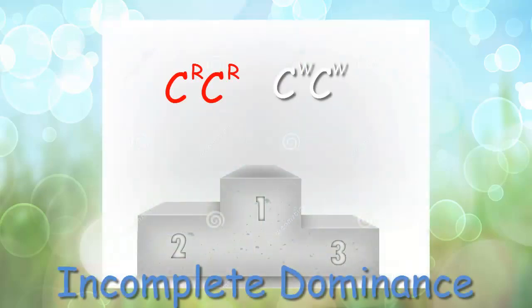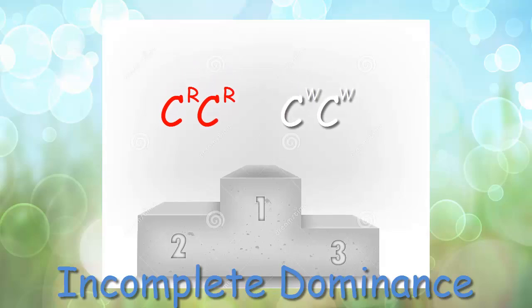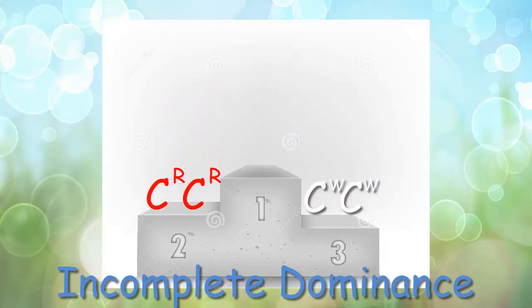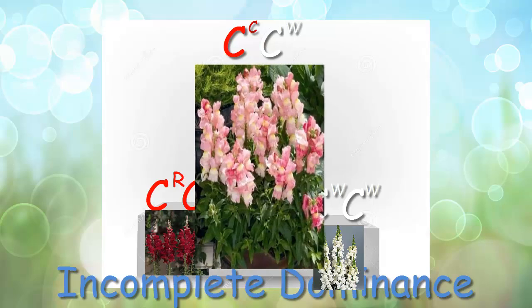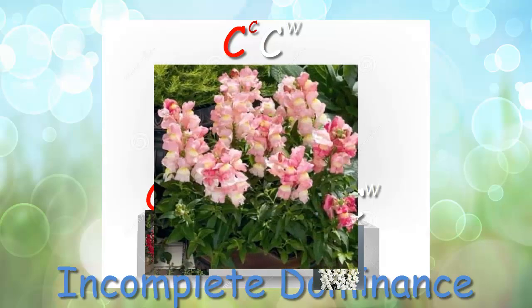On the victory scale here for incomplete dominance, neither of the two win out. They both kind of just come in a mediocre place. Neither of them win first. So when we have a heterozygous here for our red and white snapdragons, it's going to be somewhere in between. They're both going to have a little bit of say, so they're going to have a pink offspring here for the heterozygous.